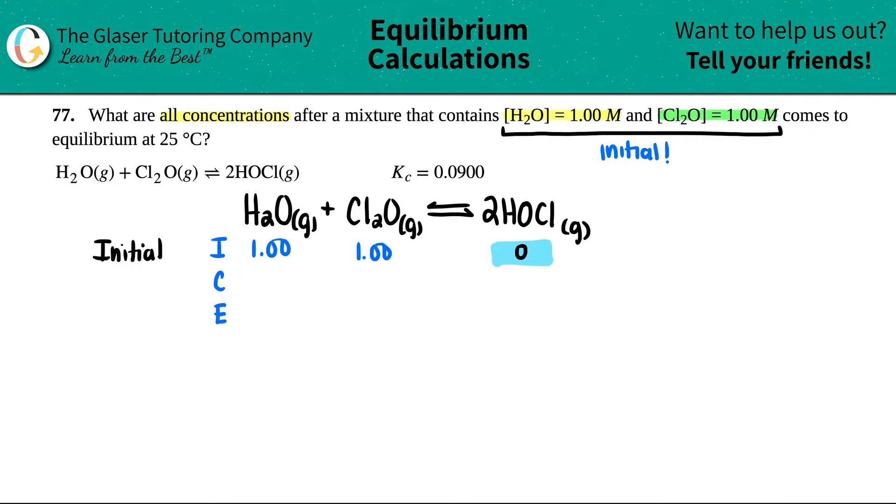Now the C line - C stands for change. Always go to your zero guy. If you're starting with nothing, you can only go up from there - there's no such thing as negative molarity or negative pressure. When you see a side with a zero, you're going to be going up - a plus. If the products are increasing, the reactants have to be decreasing, so this is the minus side.